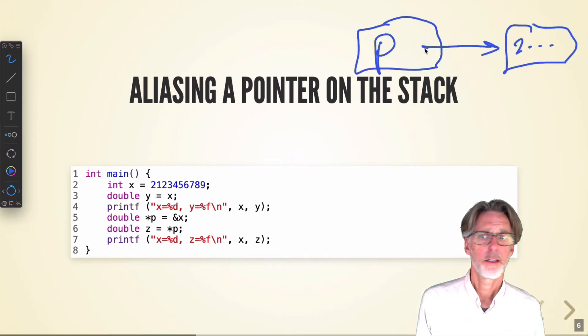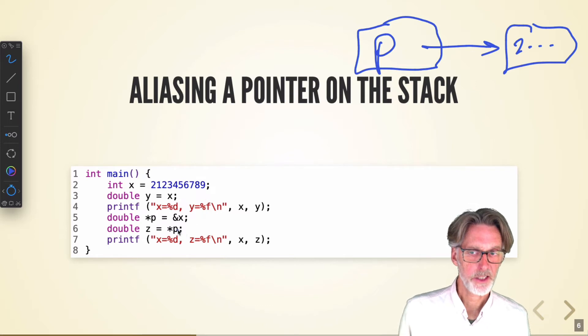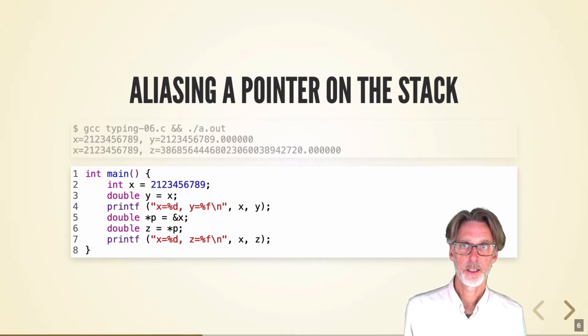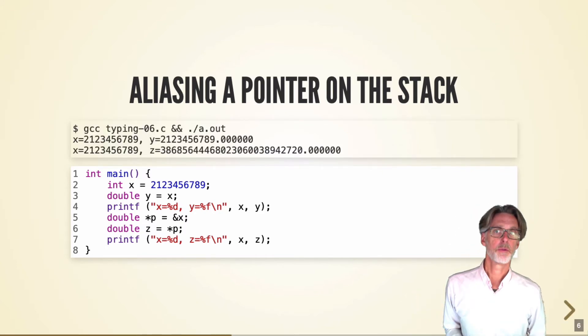If, instead, I take the pointer P, which has type double here, and have it point to the integer value that I stored, in this case, when I dereference the double, it's going to interpret this string of bits as a double, and the result is not what I'm going to want here. Indeed, what I get out is some rubbish.